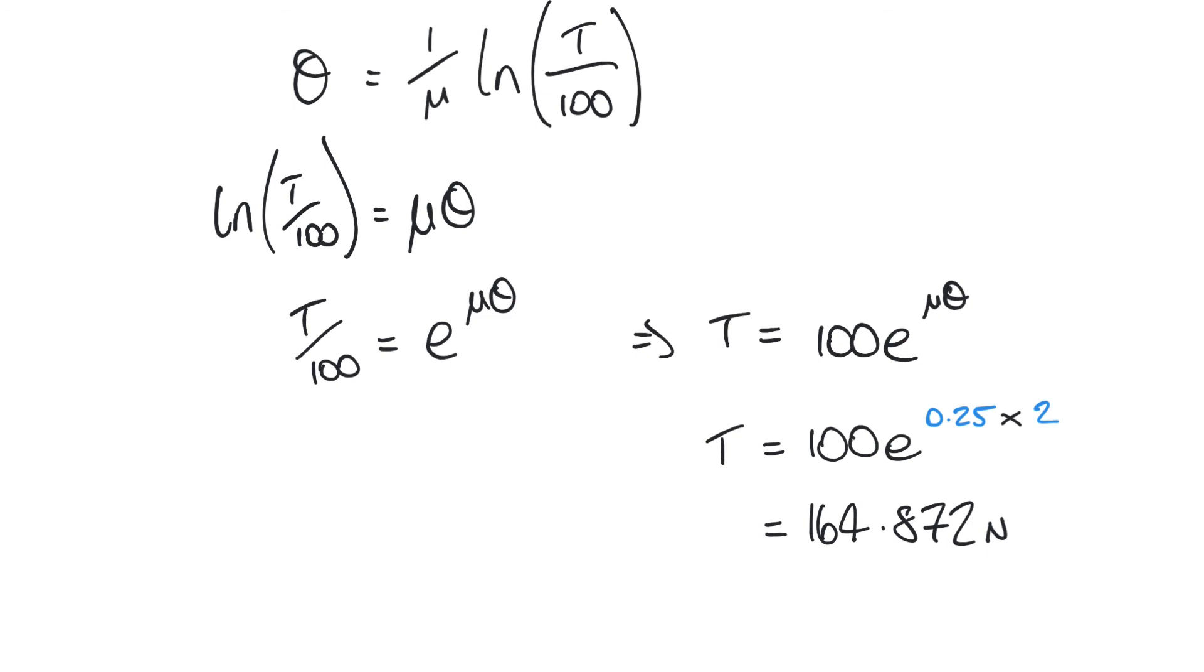In the second part of the question, part b, we were asked to determine the angle theta if the tension is 200 newtons. And so the easiest way to go about this is probably just to revisit an earlier formulation that we saw before, the one that looked like this: theta equals 1 over μ times the natural logarithm of T over 100. And again, we're told that the tension is 200, and μ we're still going to keep the same as 0.25. And so we see something that looks like this, and we get a result of 2.77 radians.